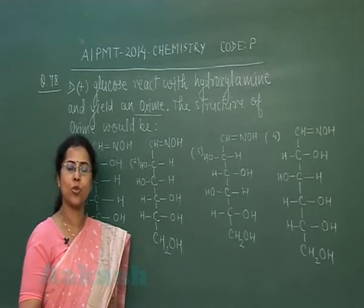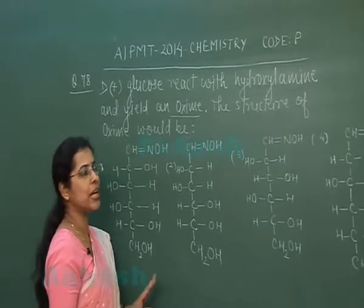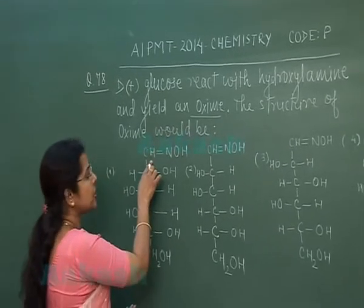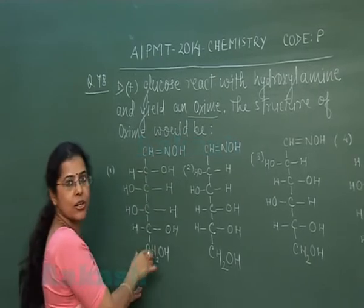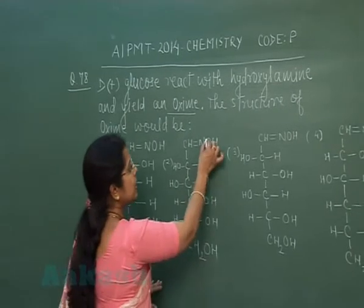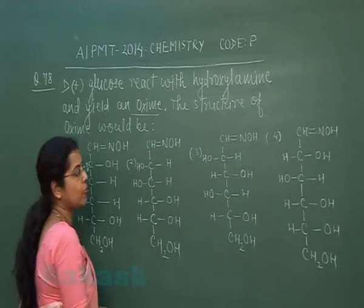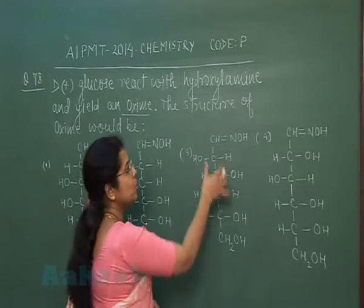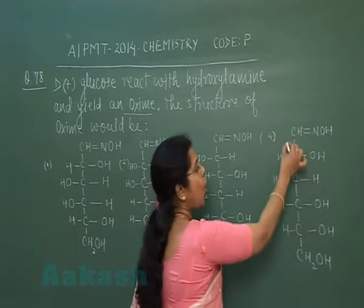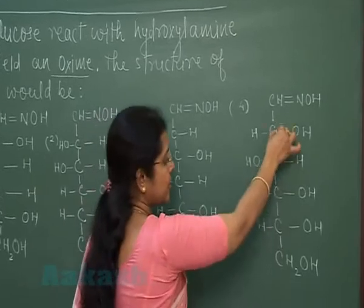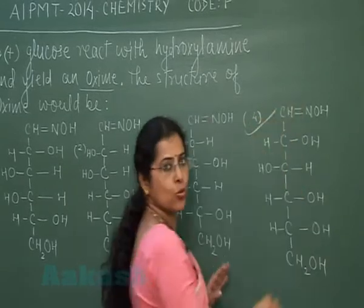In the given options, we check for oxime formation taking place only at the first carbon atom. In one option, the first carbon forms an oxime but the rest of the carbon chain does not represent glucose. In the second option, oxime formation occurs but the structure is not that of glucose. The fourth option shows oxime formation at the first carbon atom and the rest represents the glucose carbon chain, so the correct option is the fourth one.